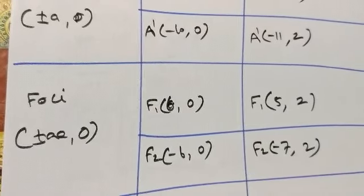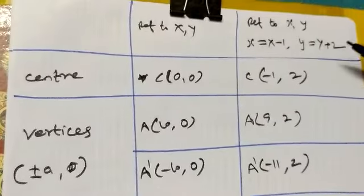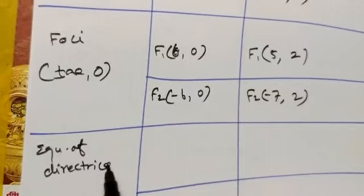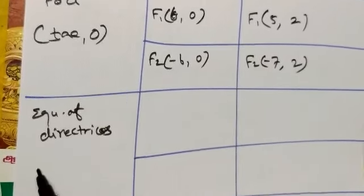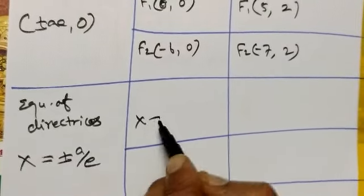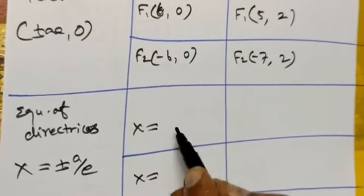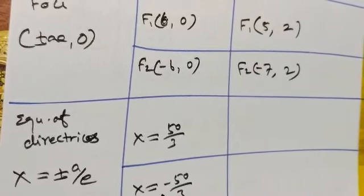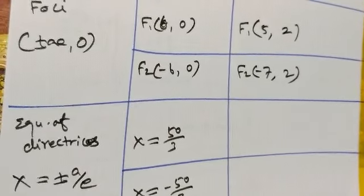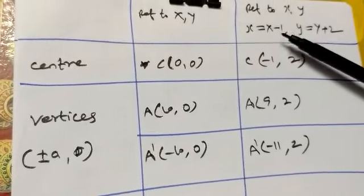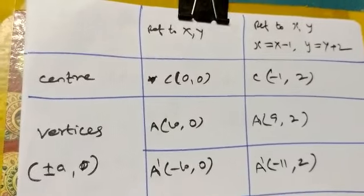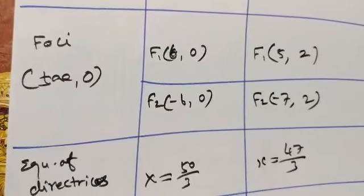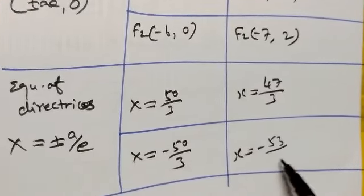Directrix equation: X = ±a/e. a/e = 10÷(3/5) = 50/3. So X = 50/3 and X = -50/3. Substituting x = X-1: when X=50/3, x=47/3; when X=-50/3, x=-53/3.